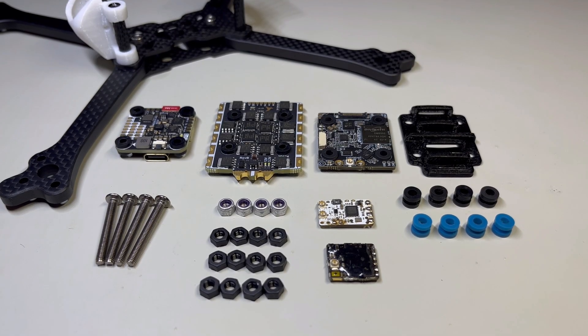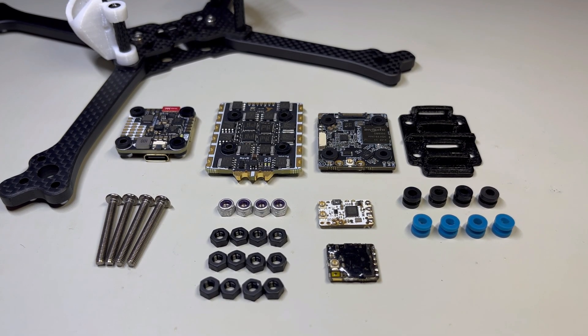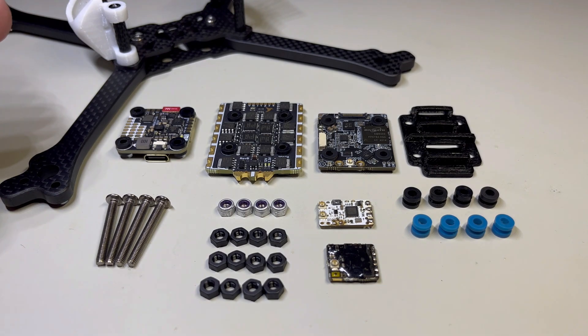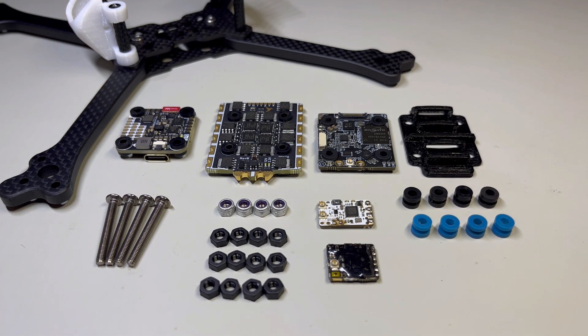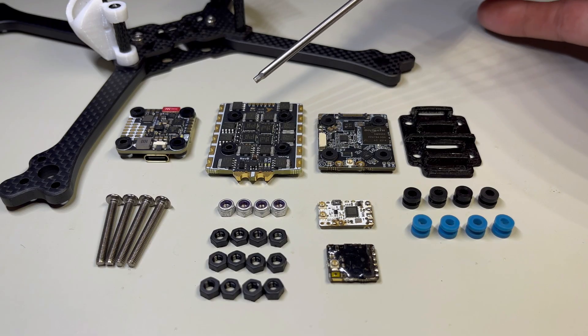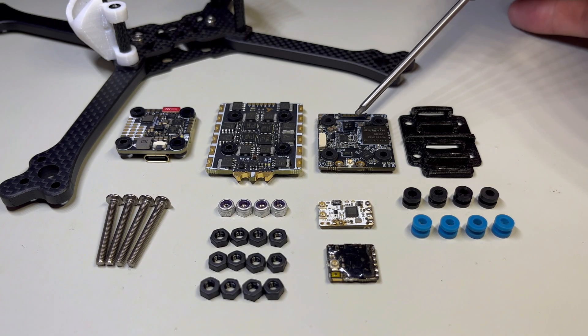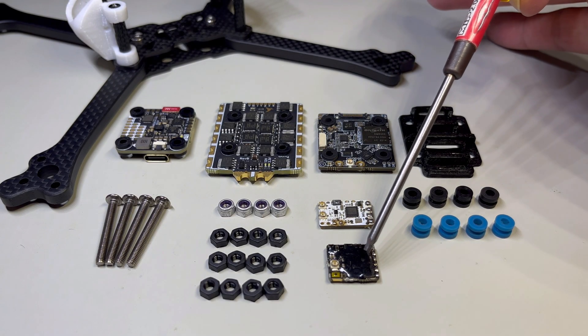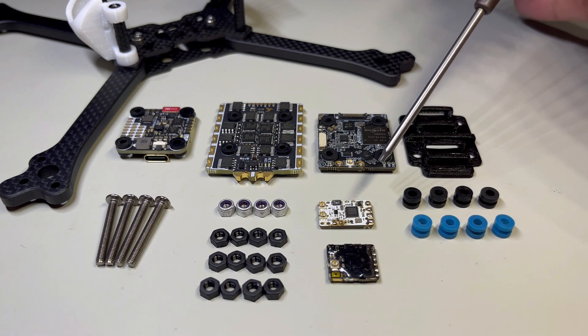So here we have all of our components we're going to be using to build our perfect FPV stack. The electronics are going to be personal preference, obviously, but we have our flight controller, ESC, we have our VTX, whether it's HD zero or analog. We have our receiver, a nifty little TPU tray here, which I'll explain later.